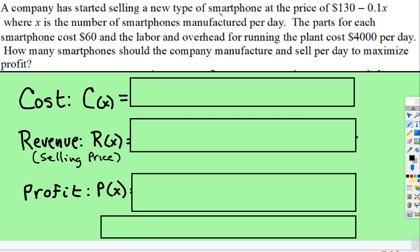So a company has started selling a new type of smartphone at the price. So that's the selling price right there. That's the cost of one phone. Well, if you're going to sell a lot of phones, that would be the revenue.